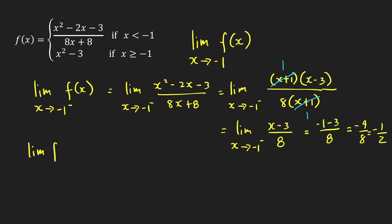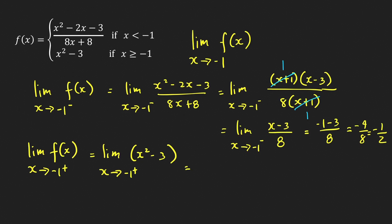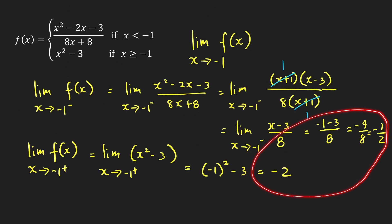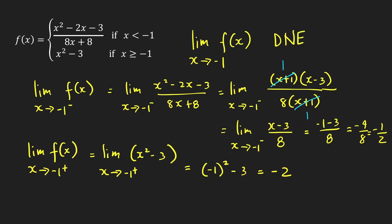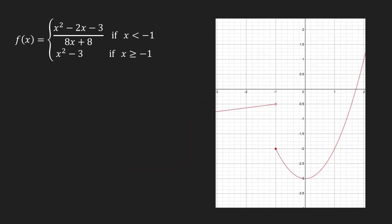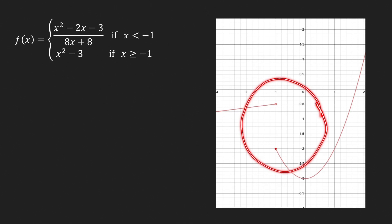For the right-hand limit as x approaches −1 from the right, we use the formula x² − 3. By direct substitution: (−1)² − 3 = 1 − 3 = −2. Since the left-hand limit (−1/2) and the right-hand limit (−2) are not equal, the two-sided limit does not exist. The graph confirms this: the left-hand limit approaches −1/2 and the right-hand limit approaches −2 — they do not converge to a single point.